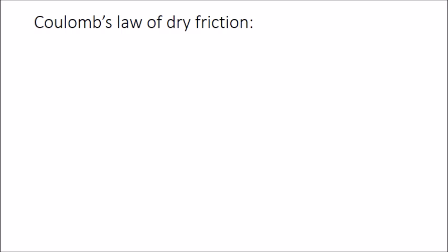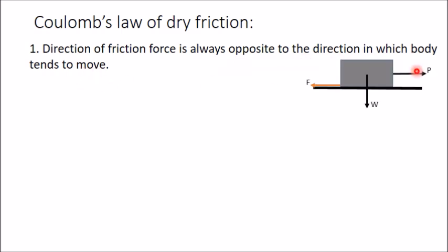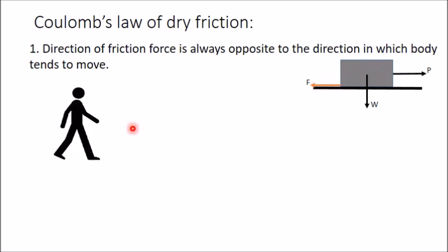Coulomb in 1781 and Morin in 1831 conducted experiments on solids in dry conditions, and the outcomes of these experiments are the laws of dry friction. The first law states that the direction of friction force is always opposite to the direction in which the body tends to move. Here, this block tends to move towards the right under force P, so friction force acts in the left side direction, opposite to the impending motion.